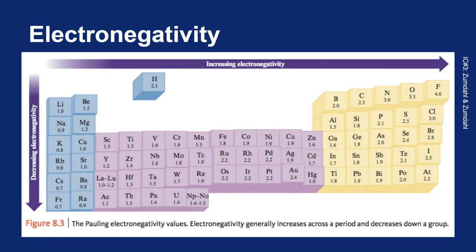Electronegativity is a periodic trend, much like ionization energy and atomic radius. In fact, they're all related. We know that atomic radius increases as you go down a column and decreases as you go across a row, and ionization energy decreases as you go down and increases as you go across. Because the larger your atoms, the easier it is to lose electrons. Electronegativity follows the same trend.